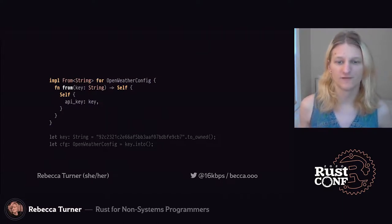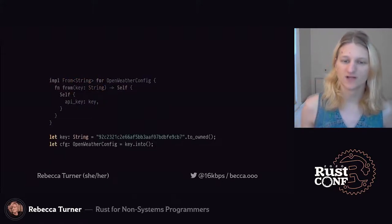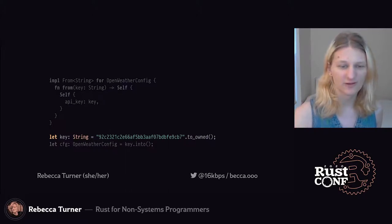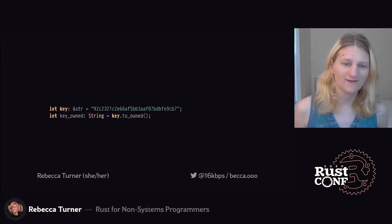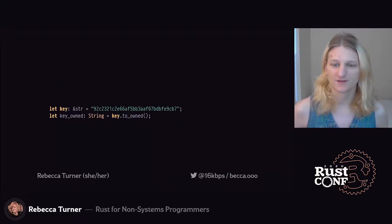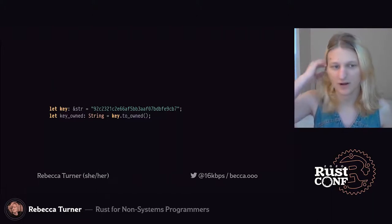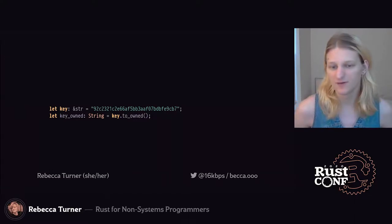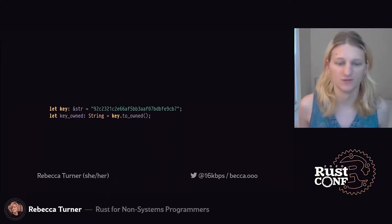So if we have an implementation of `From<String>` for `OpenWeatherConfig`, we can use the `into` method on a string to convert to an `OpenWeatherConfig` object. About that `to_owned` call — in Rust, string literals get baked into the compiled binary directly. Because that data is always sitting at a fixed location, we can't change it without copying it into memory first. So if we want a string that belongs to us, rather than one referencing data elsewhere in the program, we have to call `to_owned` to convert it, which creates a new string object and copies the data.